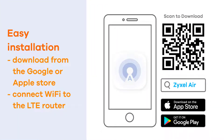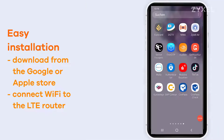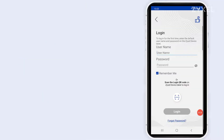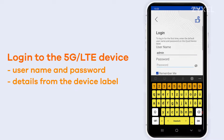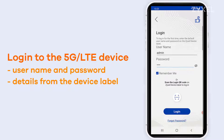Download the application from the Google Play Store or the Apple Store. Connect your mobile with the wireless of the router and start the app. It will detect the device and then you can log in to the router.